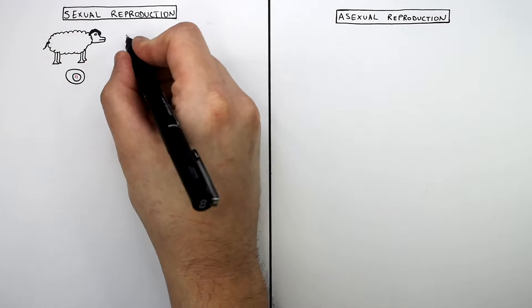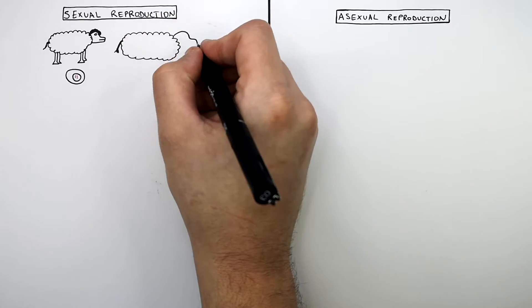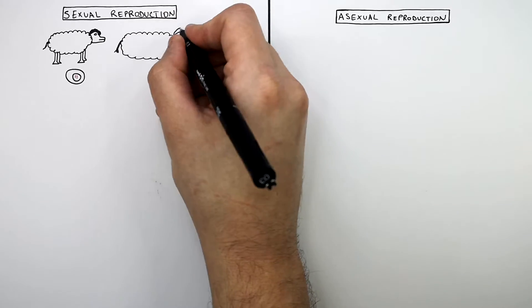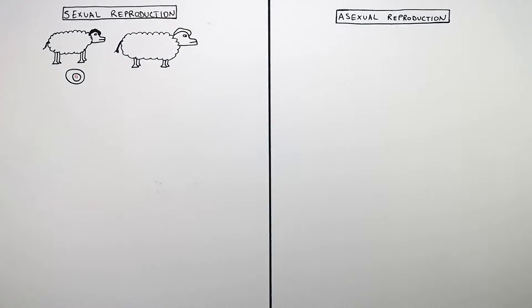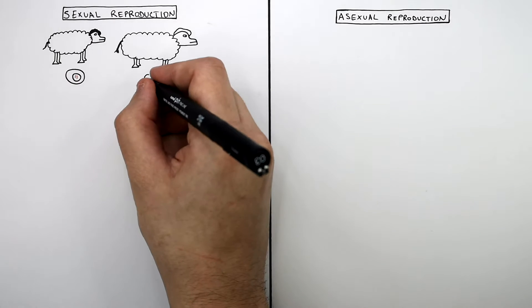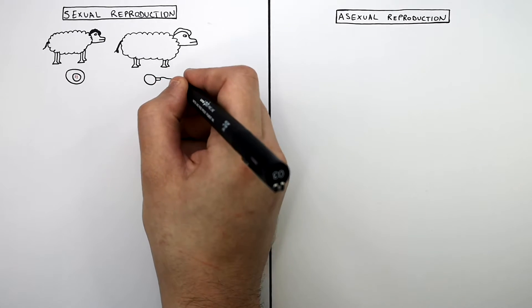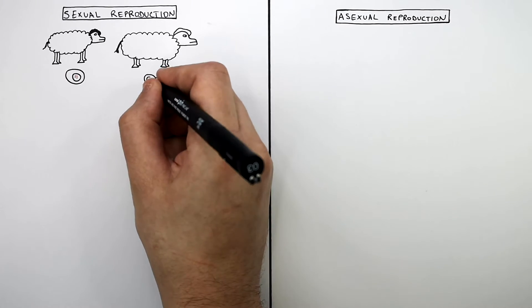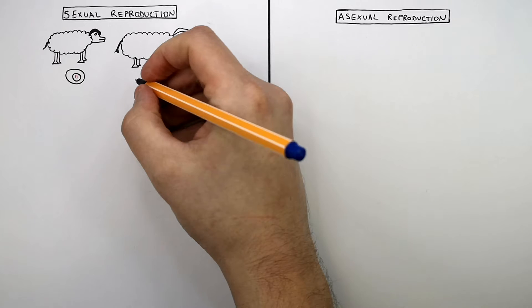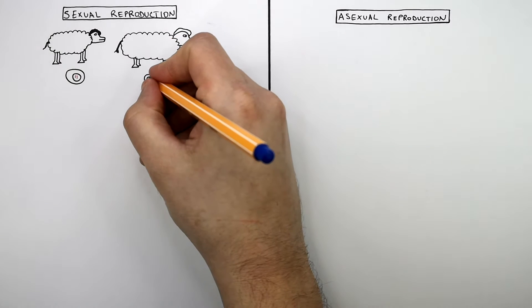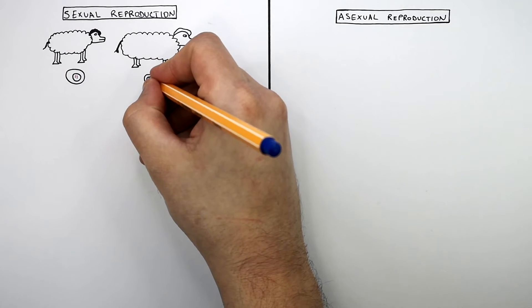This here is a male sheep with white hair on its head and short legs. And this here is the gamete from the male sheep — it is a sperm cell. This sperm cell has a haploid number of chromosomes in its nucleus.